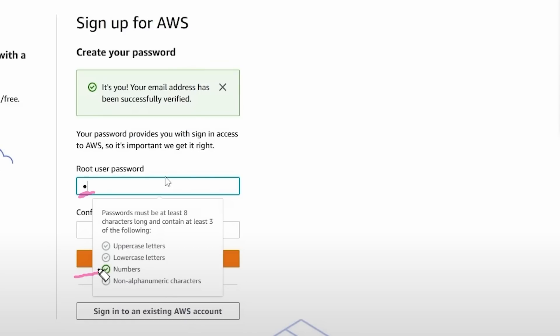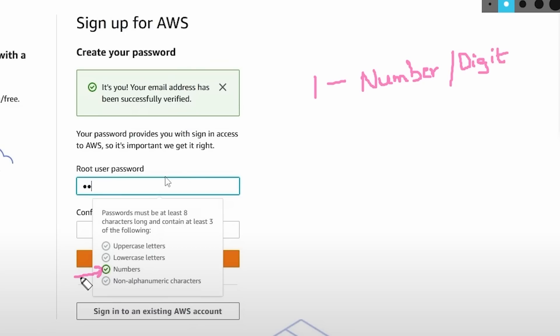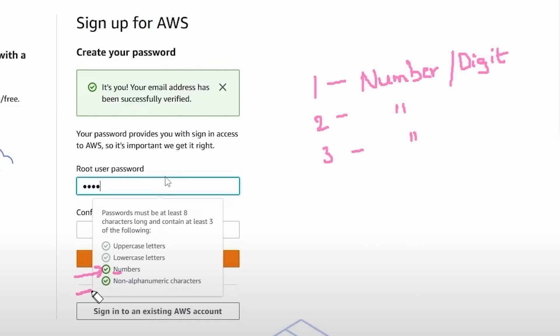For the first character, it changed the tick beside 'numbers' to green — so the first character is a number. For the second character, no change is observed and only 'numbers' is green, so the second character is also a digit. The same is true for the third character. But for the fourth character, it changed the tick beside 'non-alphanumeric character' to green.